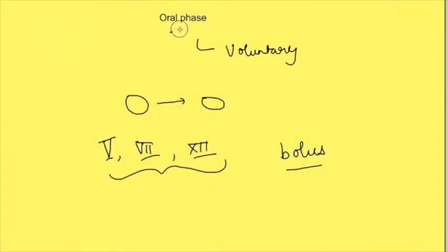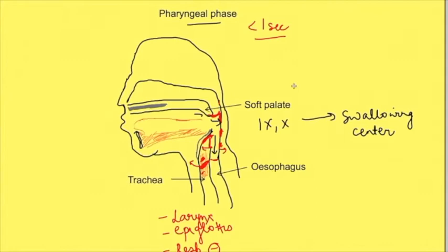Dysphagia due to problems in the oral phase can occur in paralysis of the 5th, 7th, or 12th nerve, because there will be a problem in bolus formation itself, since an adequate size of bolus should form for entry into the esophagus. Problems in the pharyngeal phase can occur because of paralysis of the 9th and 10th nerve, as these carry impulses from the oropharynx and bring about constriction of various muscles in the pharynx.